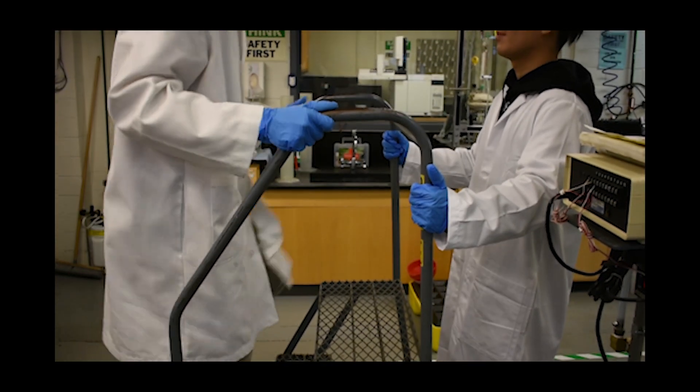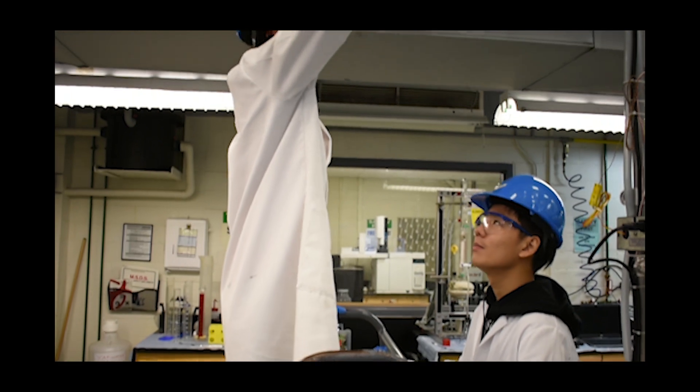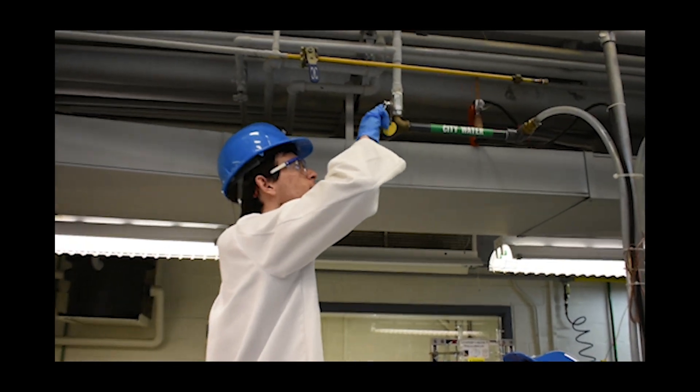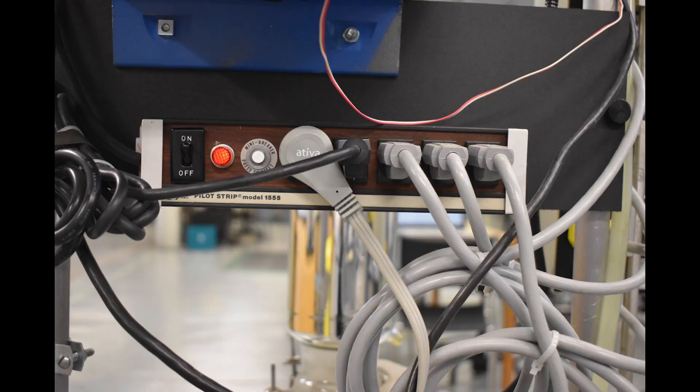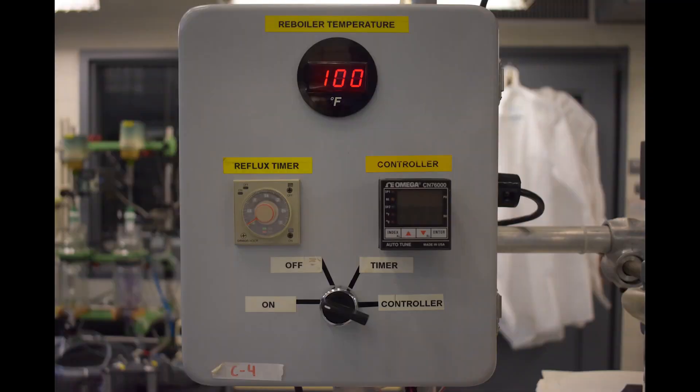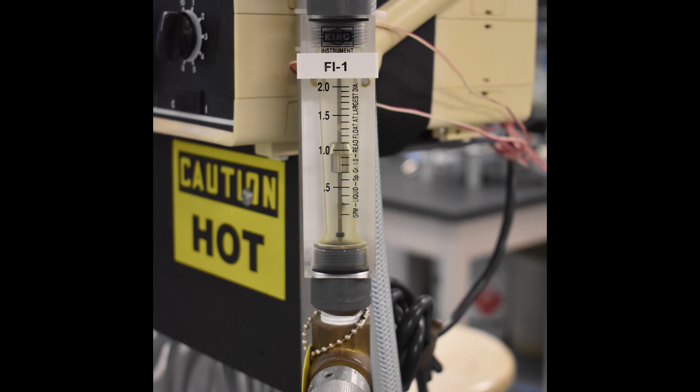Now cooling water needs to begin flowing through the condensers in the system. Open the city water valve above the column using a stepladder and making sure that someone is supporting the stepladder as shown here. Next, open valve 3 and set the flow indicator to 1 gallon per minute. Any flow rate higher than that will result in flooding of the drainage. Cooling water is now flowing through both condensers.